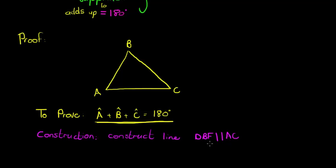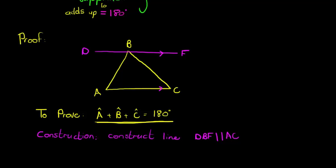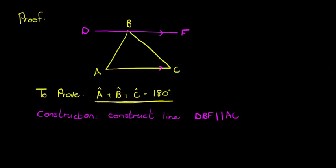So usually a line is just two letters like DF, but to show that it passes through the point B, it's line DBF. And I've constructed it to be parallel to line AC. Make sense so far? And other than that, it's actually a very simple proof.